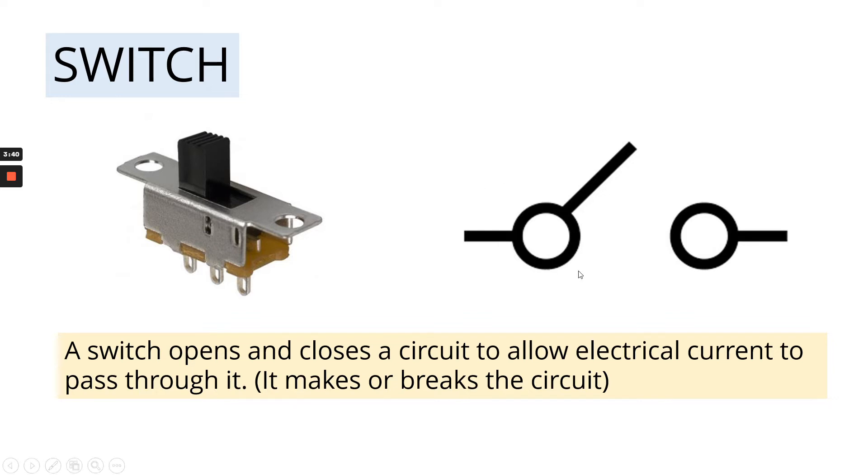The way it's been drawn here, the switch is open, which means that there's a gap between the door of the switch and the other side. That means that electrical current cannot pass from here to here because there's a gap. So that's broken the circuit. If this bar was closed, so it connects on both of these sides, then it would make the circuit because the electrical current would be able to pass all the way through.